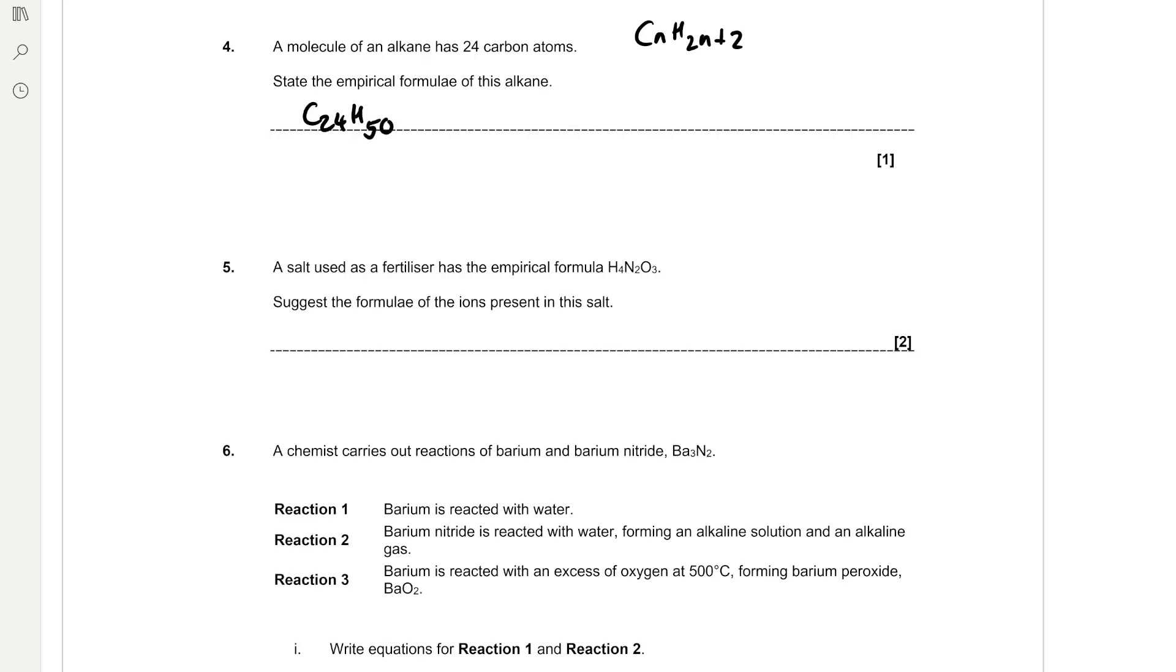Question 5. Salt used as a fertilizer has the empirical formula H4N2O3. Suggest the formula of the ions present in the salt. So the definition of a salt is a product of a reaction in which H plus ions are replaced by ammonium or metal ions. So in this salt we're going to have ammonium ions and it's going to be formed from nitric acid. So we're going to have NO3 minus ions as well. So ammonium ions are NH4 plus and nitrate ions are NO3 minus. And that combines together the empirical formula and it balances on charge as well.